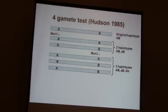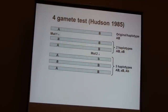At some later time, another mutation must have happened at site two, and at this point three haplotypes were in circulation in the population. If this is all that happened, no matter how you look, you would never see more than three distinct haplotypes in the population.